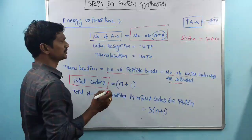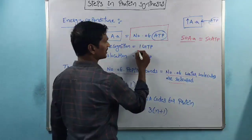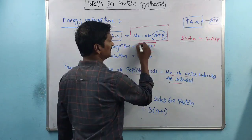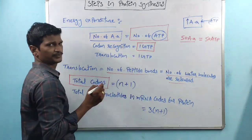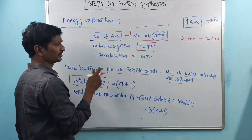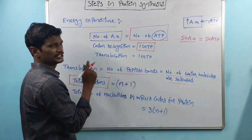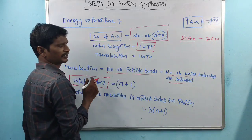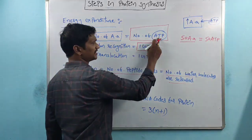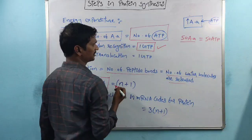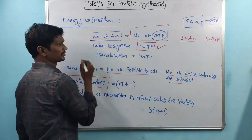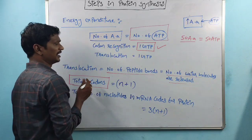The next step is the codon recognition process. Each codon recognition requires one GTP — remember, activation uses ATP and codon recognition uses GTP. That is the second step.